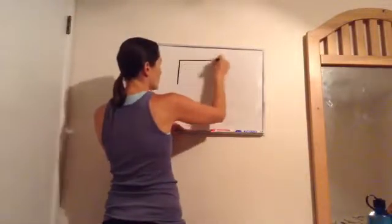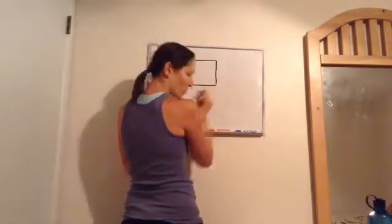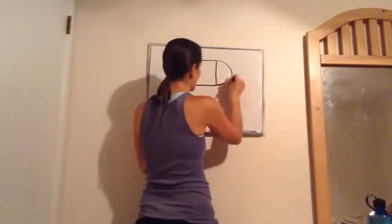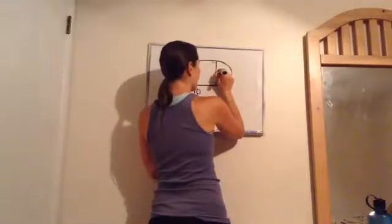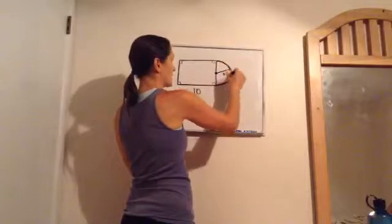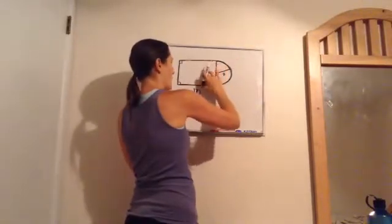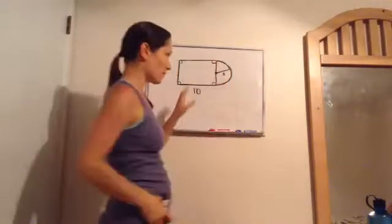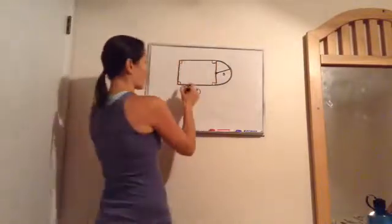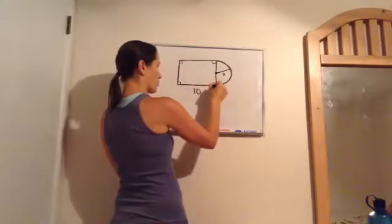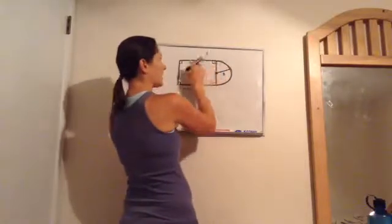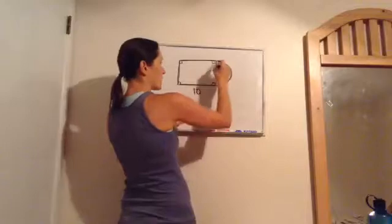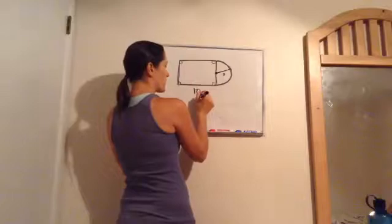Now we're going to combine two lessons. Here's a figure where all the corners are square, this side is 10, and from the center of the half circle to the edge is 3. Hopefully you recognize that portion as a half circle. We're going to find the perimeter — the distance around the straight edges — and then the circumference of the half circle.